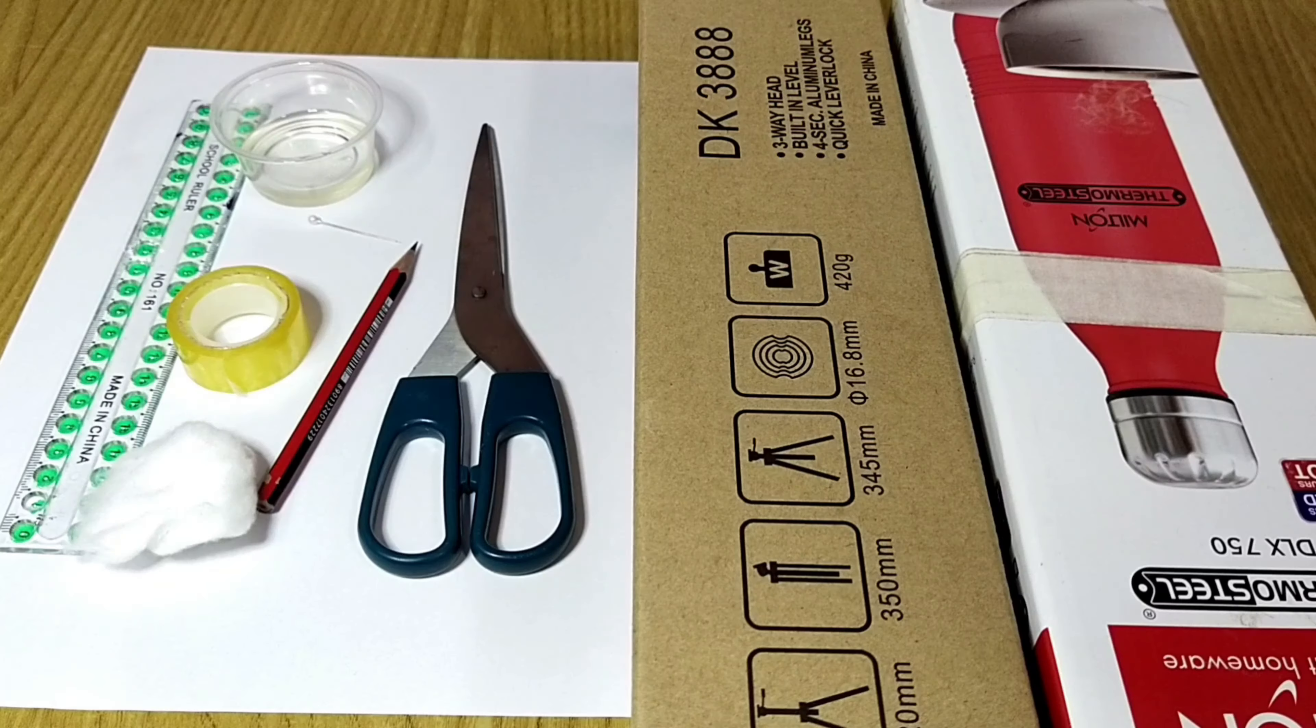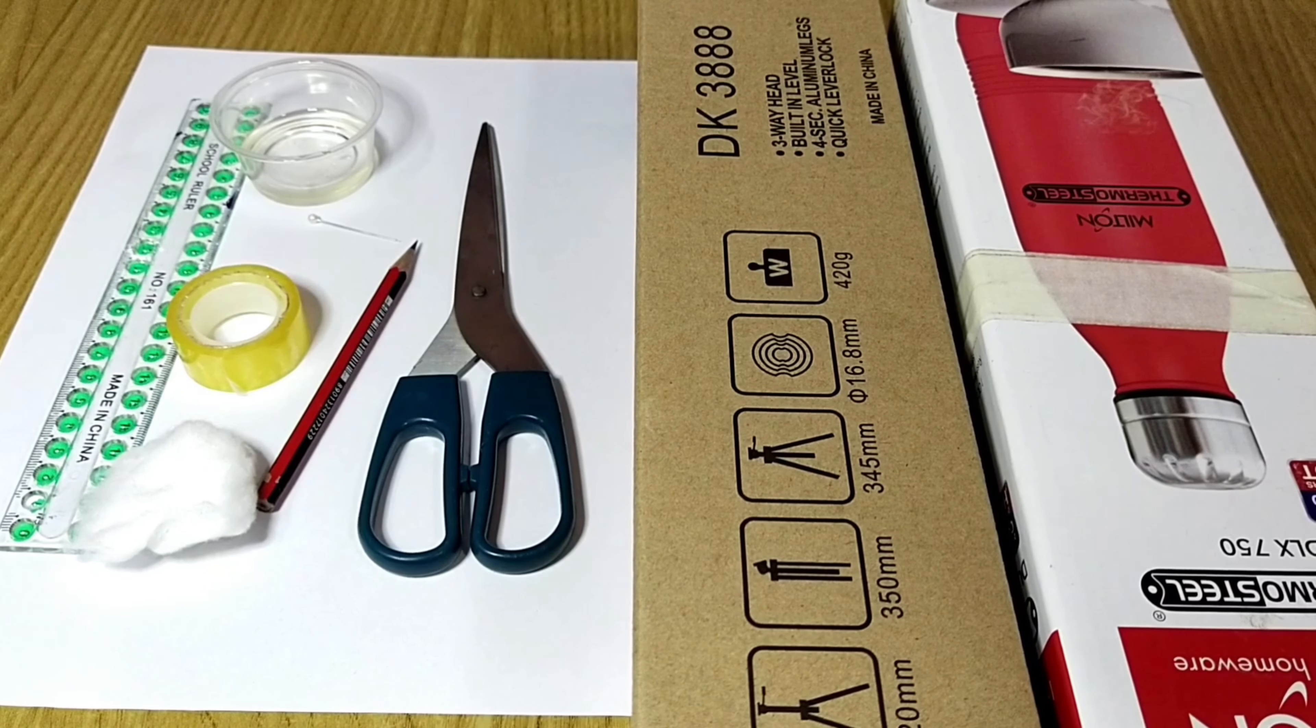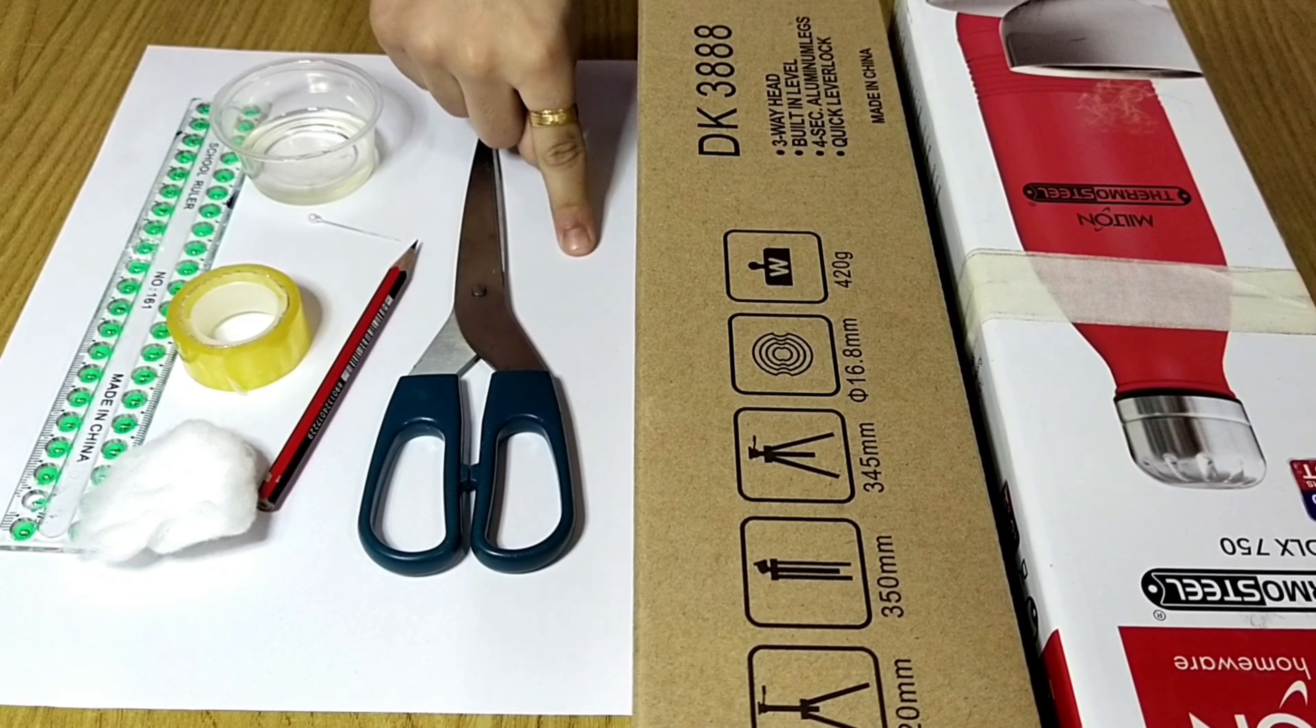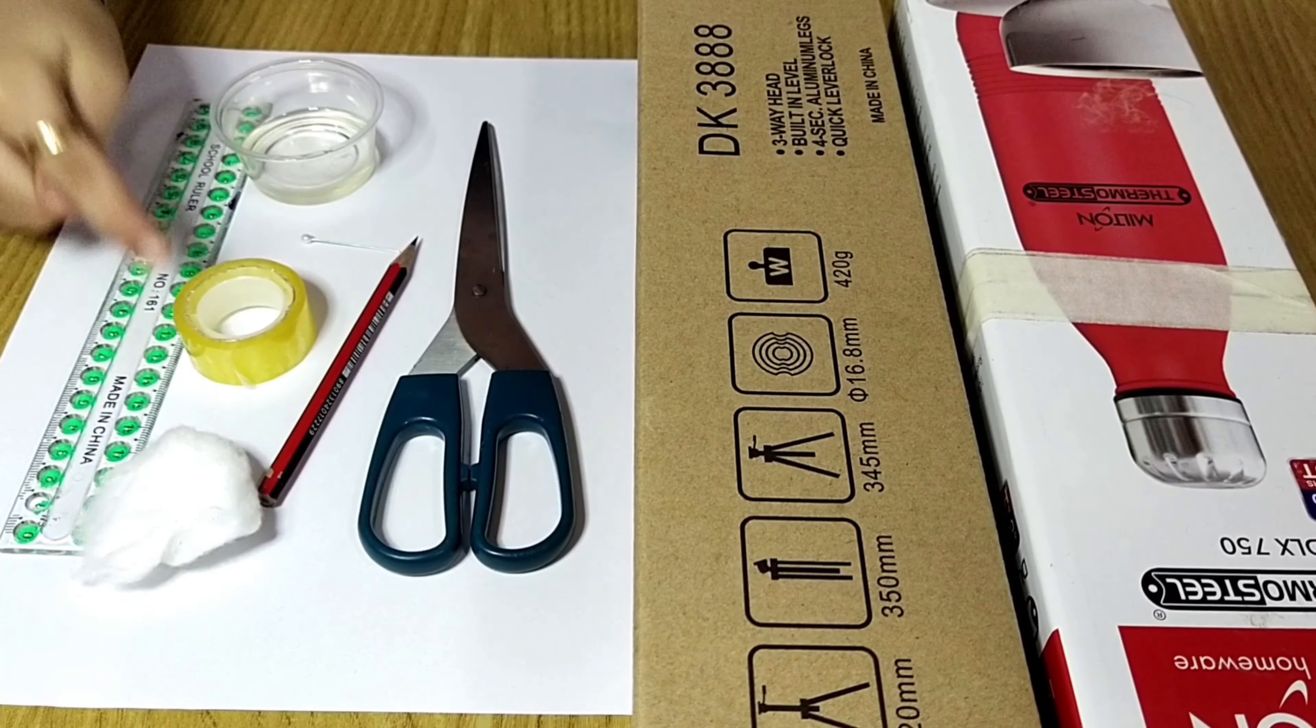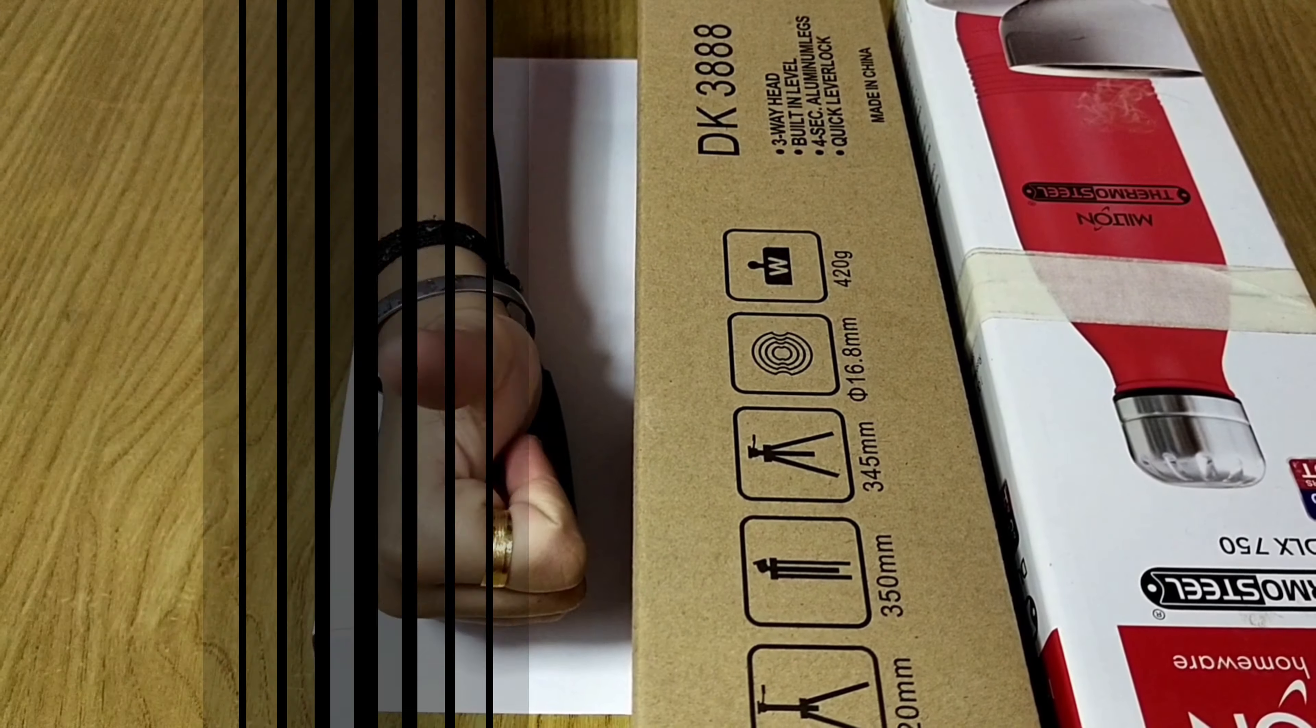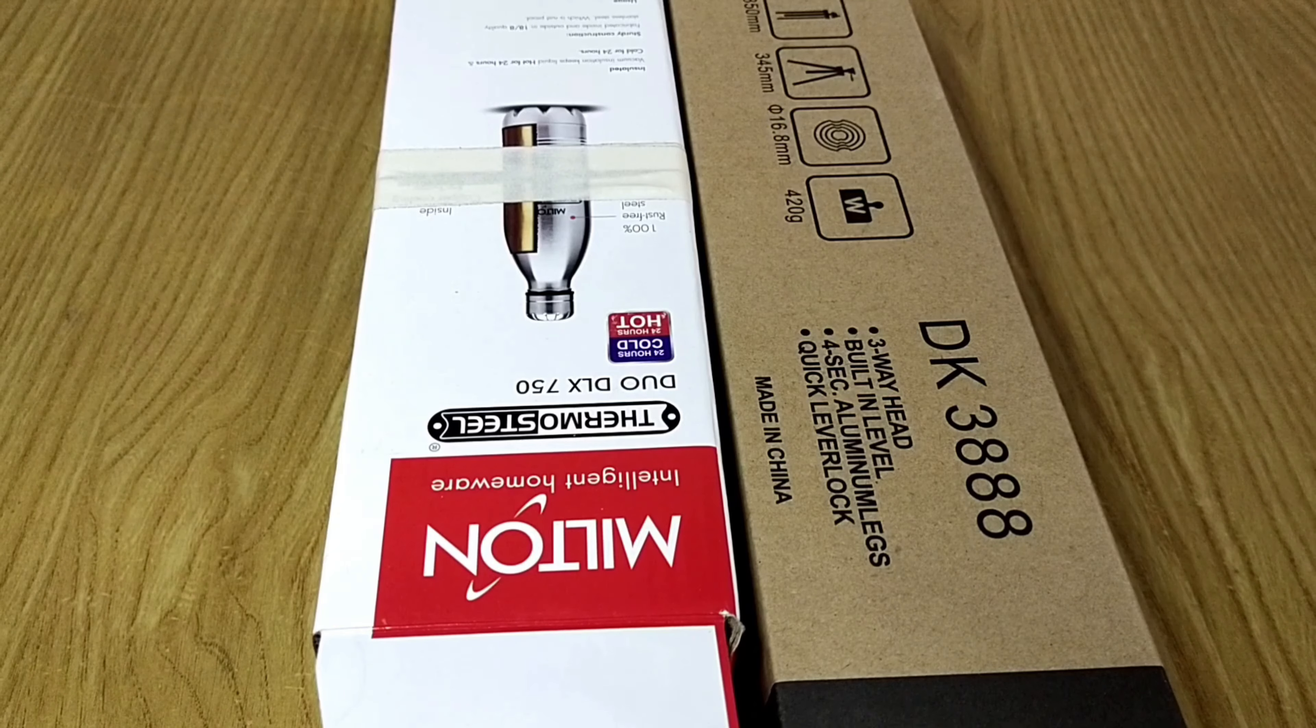To make a pinhole camera we need two boxes that fit into one another without any gap between them, tracing paper or white paper, scissors, pencil, pin, cello tape, cotton, oil, and ruler. Let's get started. Take the two boxes and make sure the smaller one goes inside the bigger one without leaving any gap.